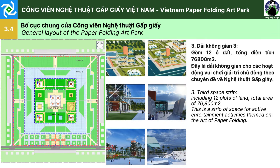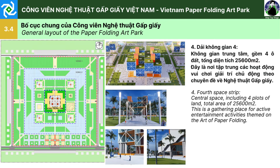Giải không gian thứ 3, gồm 12 ô đất, tổng diện tích là 76.800m². Đây là giải không gian cho các hoạt động giải trí chủ động theo chuyên đề về nghệ thuật gấp giấy. Giải không gian thứ 4 là không gian trung tâm, gồm 4 ô đất, tổng diện tích 25.600m². Đây là nơi tập trung các hoạt động vui chơi giải trí chủ động theo chuyên đề về nghệ thuật gấp giấy.